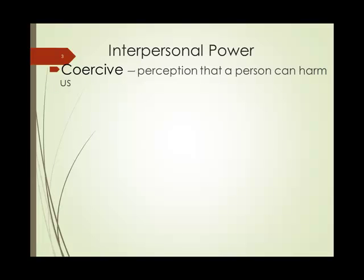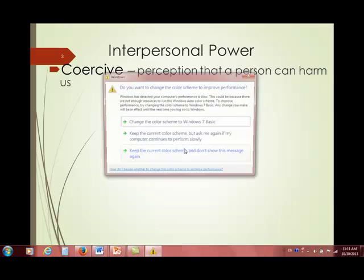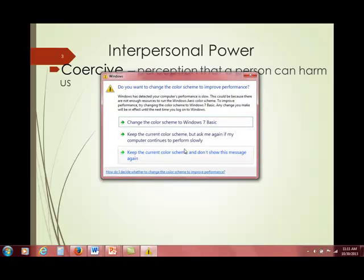They talk about different types of power here in the chapter. The first one is coercive power. Remember, my perception is my reality, your perception is your reality — it's all about perception. It's our perception or belief that another person can harm us if they're trying to coerce us into doing something that we don't want to do.